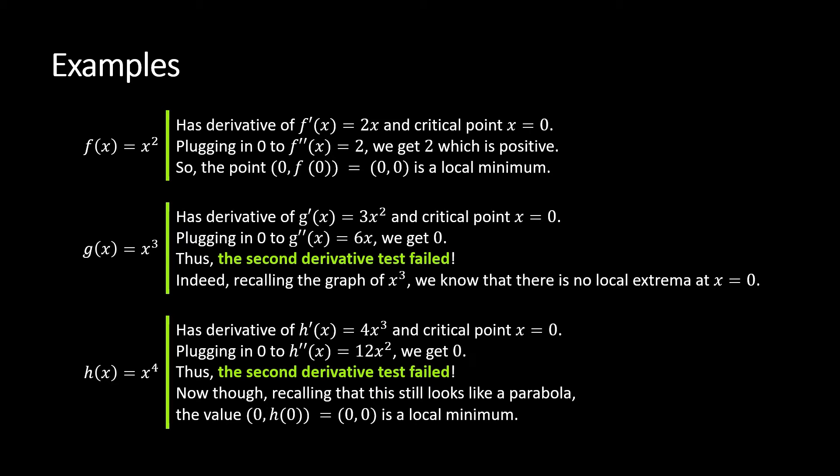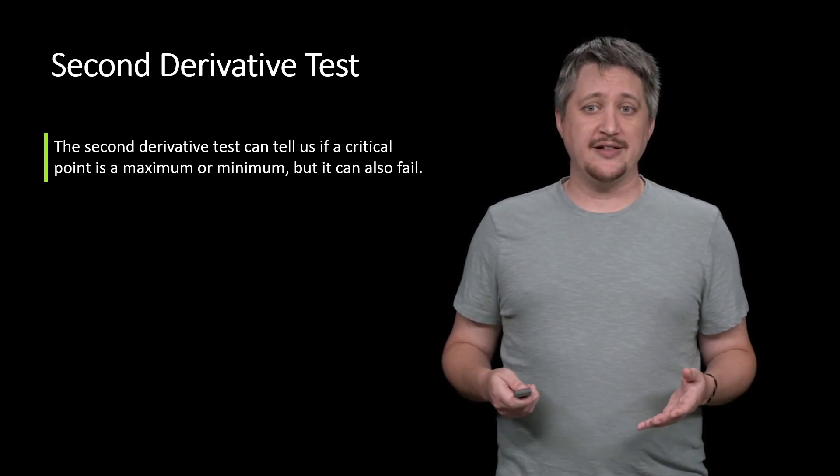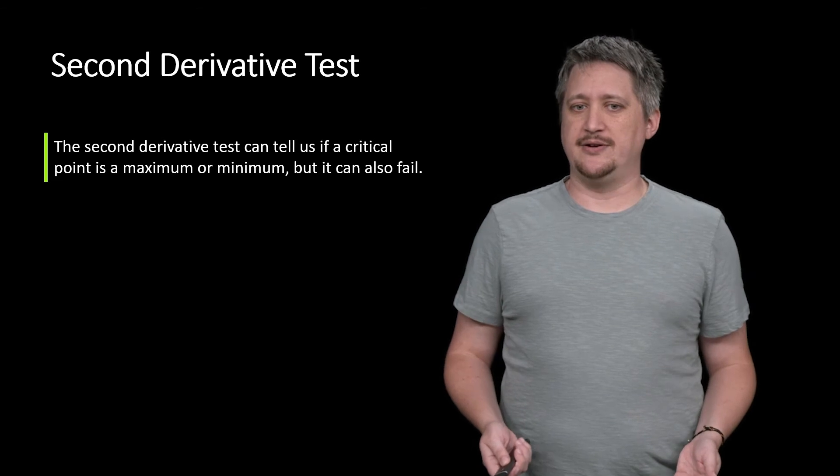Here's an example where g(x), the second derivative test failed and it wasn't an extrema. h(x), the second derivative test failed and it was an extrema. So if the test fails, we don't know anything. That's really important to come away with, that piece in your head. Second derivative test can tell us if a critical point is a maximum or minimum, but it can also fail.